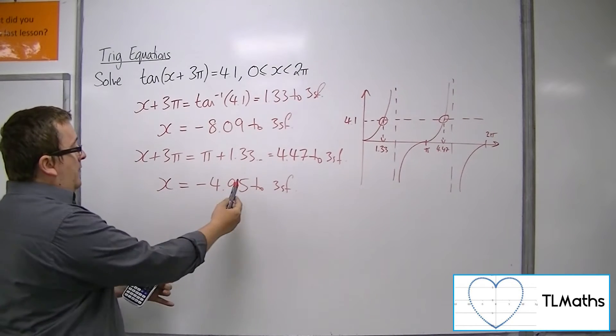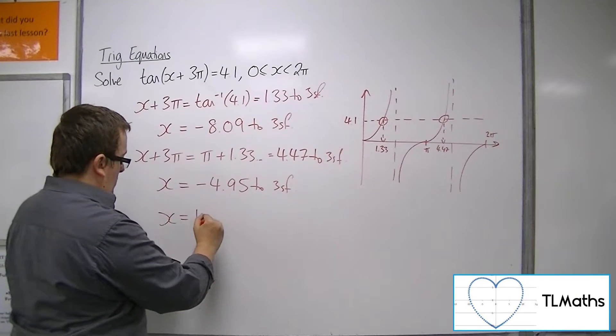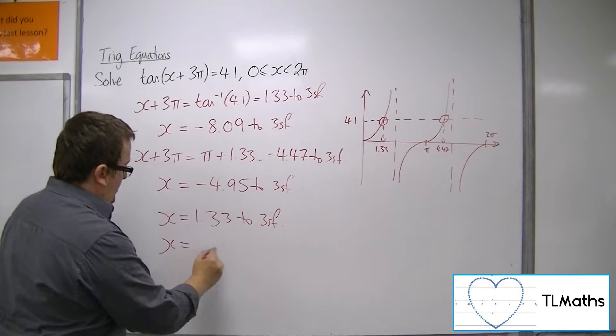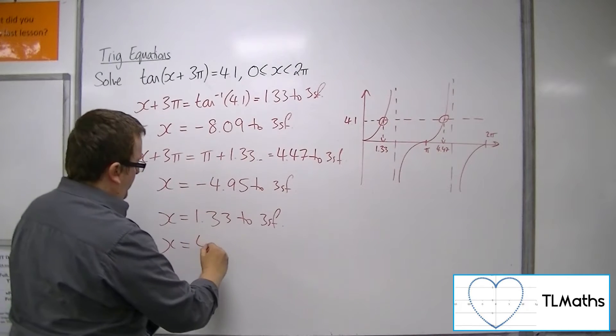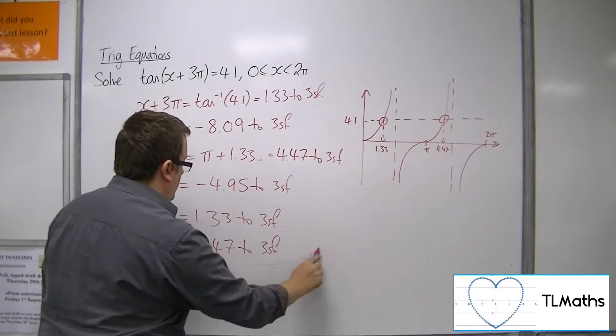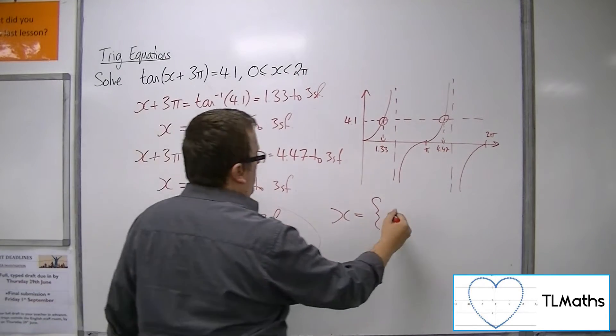Funnily enough, I add π to that, then I add another π, and I get back to 1.33. And then adding on π to that, I get to the 4.47. So they are still the two solutions that I want.